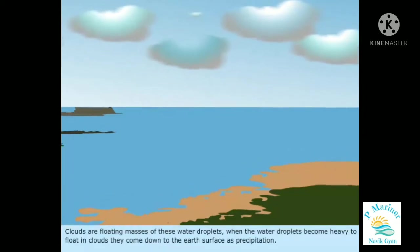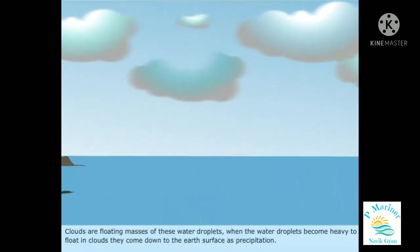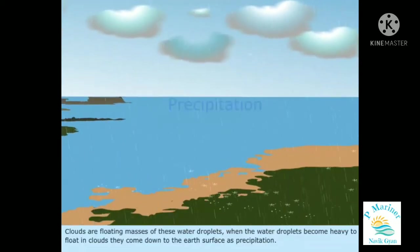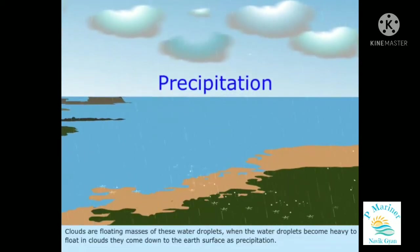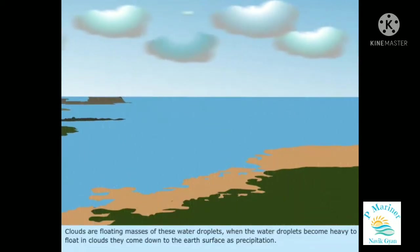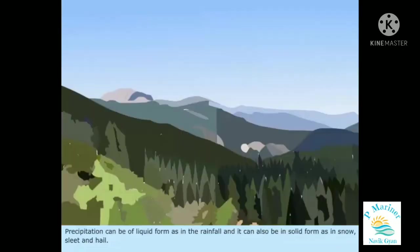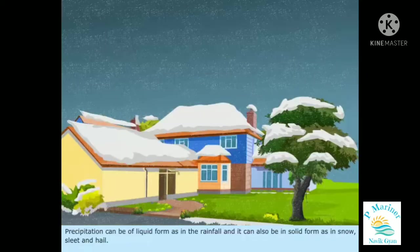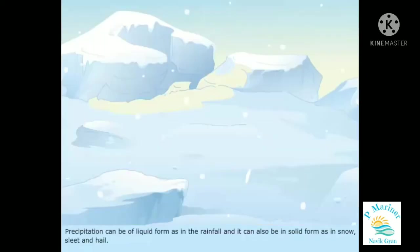When the water droplets become too heavy to float in clouds, they come down to the Earth's surface as precipitation. Precipitation can be of liquid form, as in rainfall, and it can also be in solid form, as in snow, sleet, and hail.